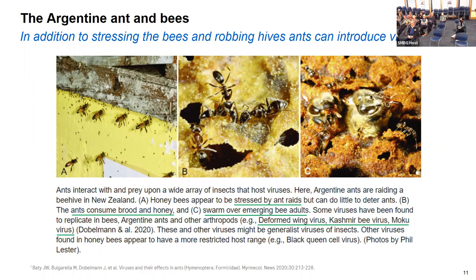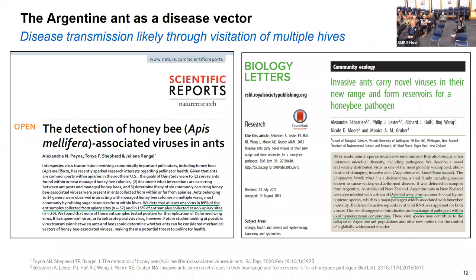A scientific paper found that ants, including Argentine ants, are carrying deformed wing virus, Kashmir bee virus, bee virus, and another one called Moku virus into the hives. A paper in Scientific Reports — very highly reputable — found they detected at least one virus in 89% of ant samples collected from an apiary site, but only in 15% of ants collected at a non-apiary site. So ants in an apiary have more virus on board than ants out in an empty field. This paper confirmed that these ants carry deformed wing virus and exchange pathogens within the local bee community.